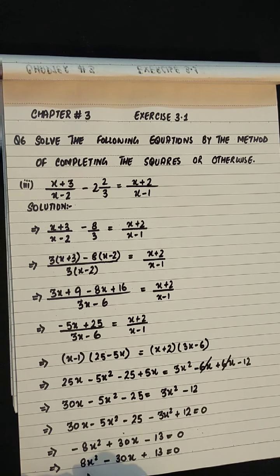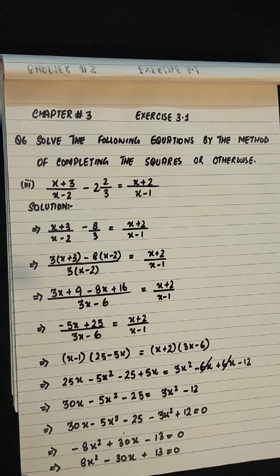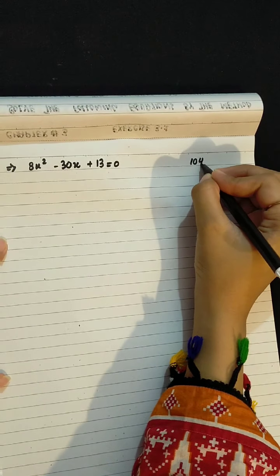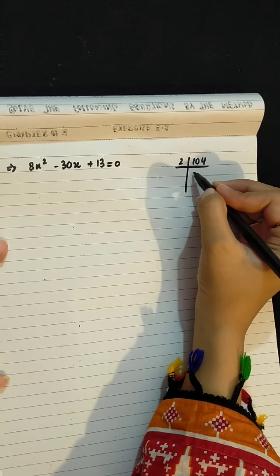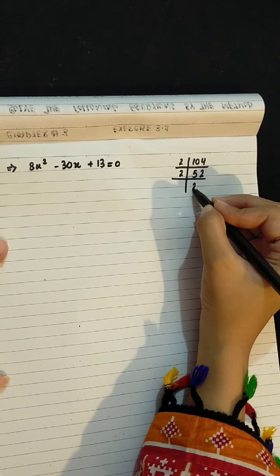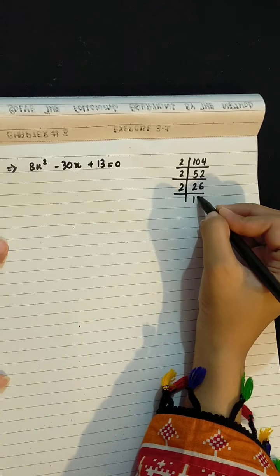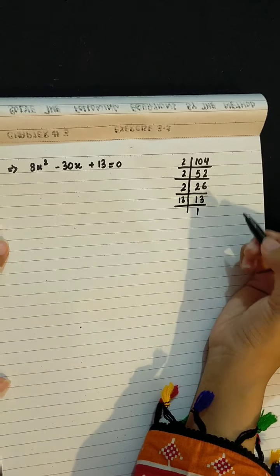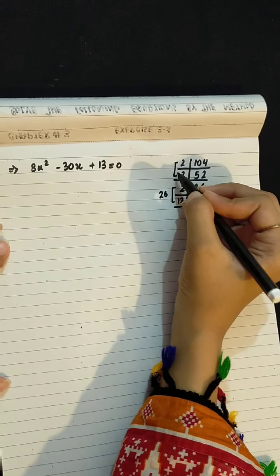Now we will apply the middle term. 8 into 13 is 104. So we will take 2, 52. 2, 26. 2, 13. And 13 is 13. So what are our factors? 26 and 4.